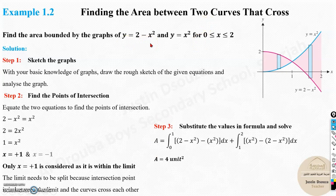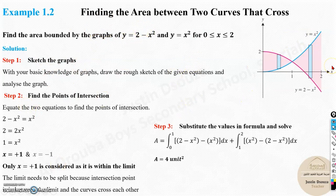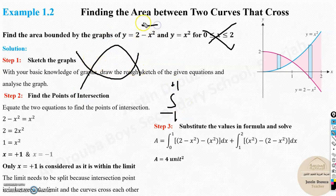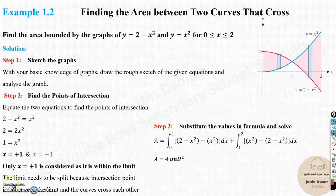A few key points to remember: understand the basic shape of the functions, always look at the given limits, and find the points of intersection. These are the two most important steps — understanding which is the upper and lower function, and finding intersection points. If no limits were given here, you would integrate from minus 1 to positive 1 with the straightforward upper and lower functions.